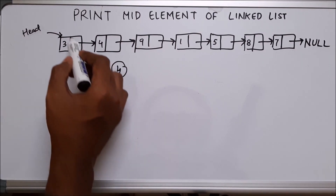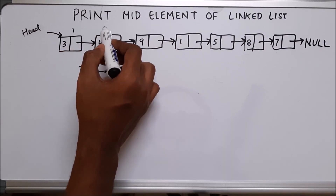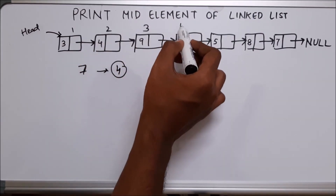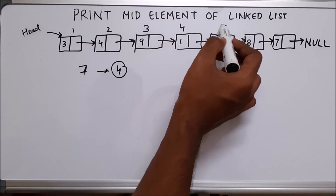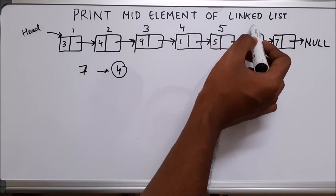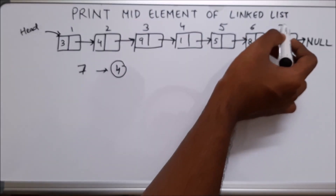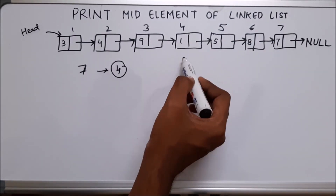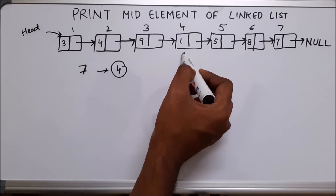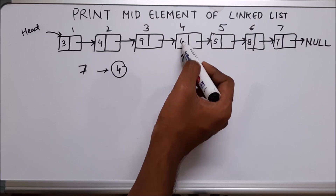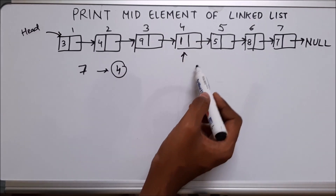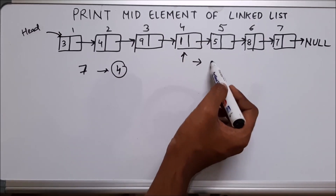This is the first node, this is the second node, this is the third, this is the fourth, fifth, sixth, and seventh node. So this value — this should be the output.